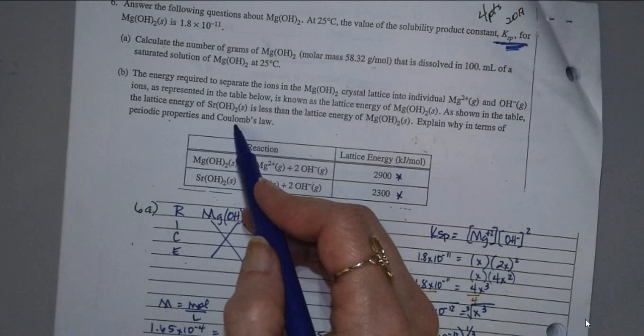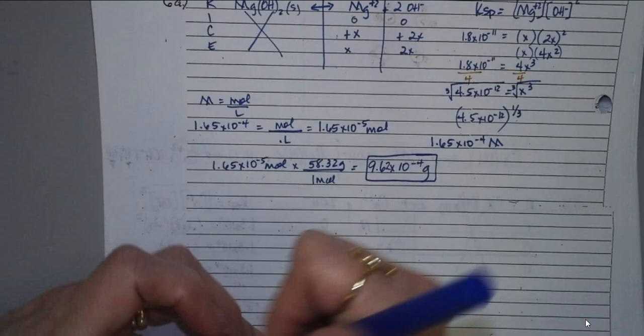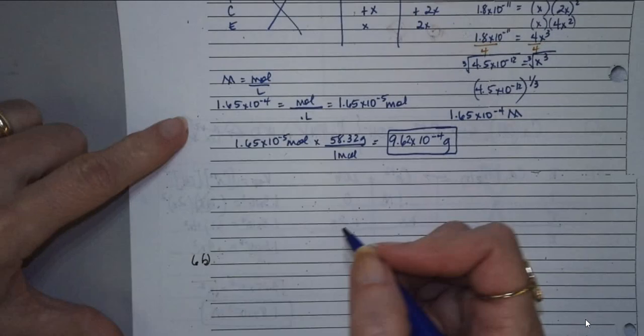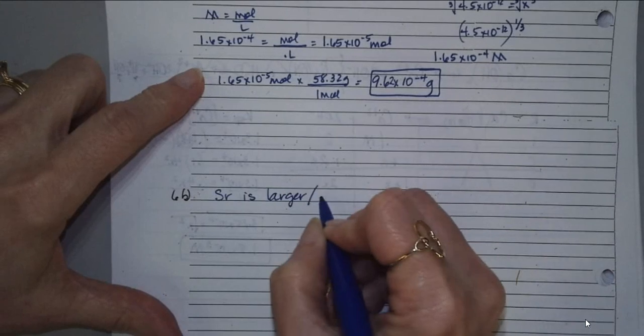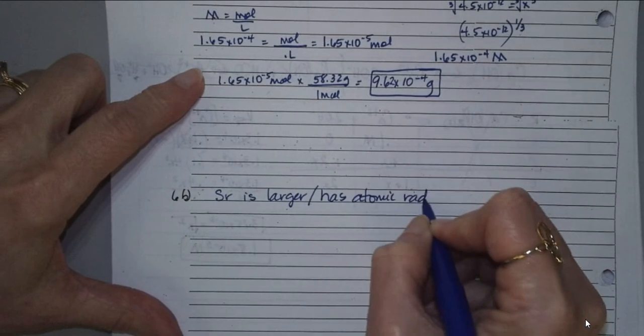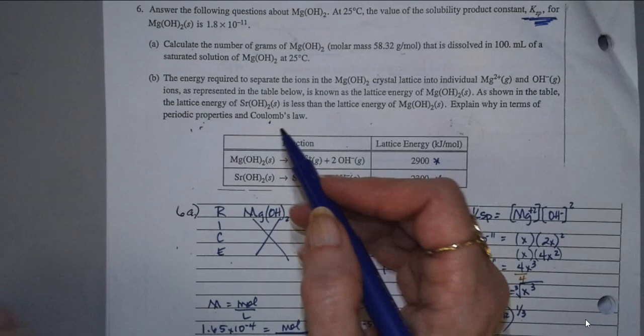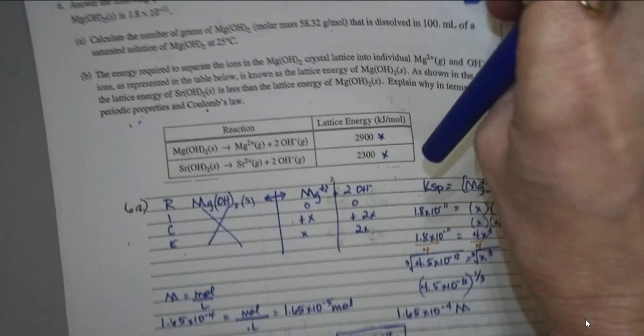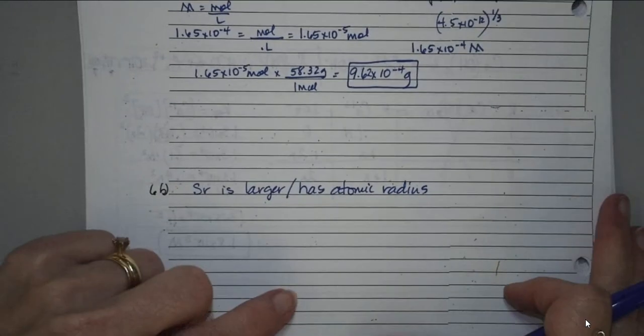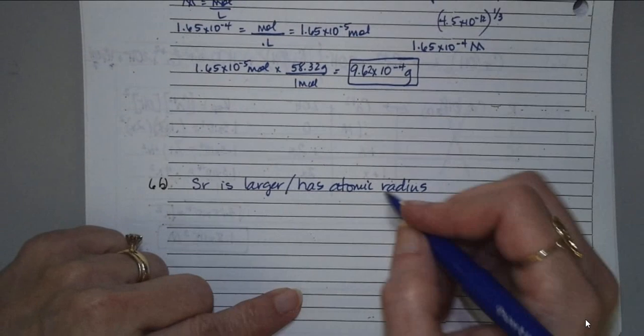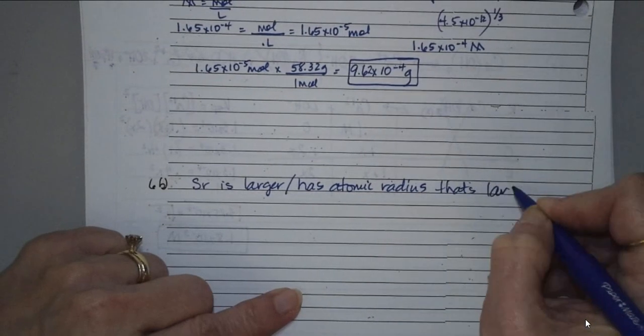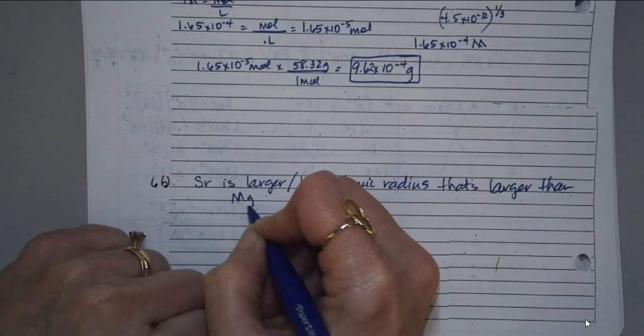So periodic properties and Coulomb's law. Well, look on the periodic table. Which one's bigger? Strontium is bigger. So, first of all, I would put on here strontium is larger. Here I would say, because in Coulomb's law, that's going to say the separation. Because they're not really asking why it's larger, they're asking about the energy of it. Does that make sense? So, strontium is larger, so it has an atomic radius that's larger than magnesium. So, that's the periodic property. Strontium is larger. They get bigger as they go down.